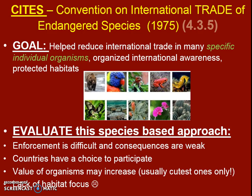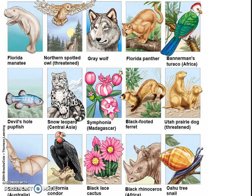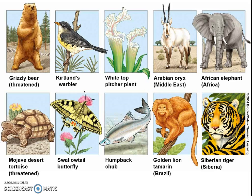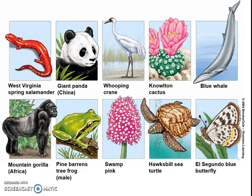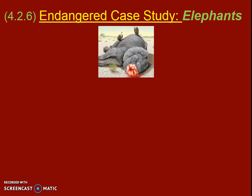Now that we've covered what CITES is, we're going to talk about some specific organisms — some that could have been on CITES and some that are just endangered — and how their different situations have changed over time. We're going to focus in on three different case studies. Our first case study is the endangered case study, which is for elephants.